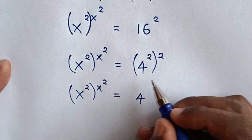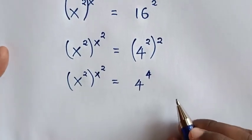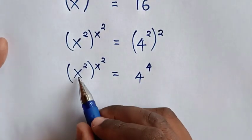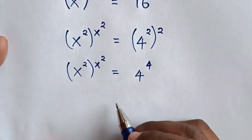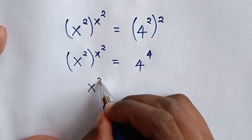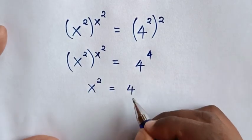This becomes (x^3)^(x^2) = 4^4. Then we'll compare the base x^2 is equal to the base 4, and the power x^2 is equal to the power 4, so x^2 = 4.